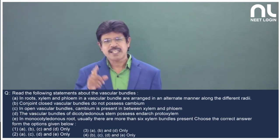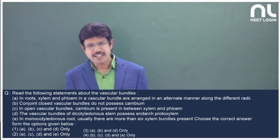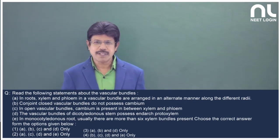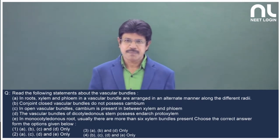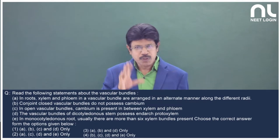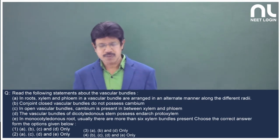Yes, xylem and phloem are on different radii. The vascular bundles which are radial are present in monocot root as well as the dicot root. That is right.